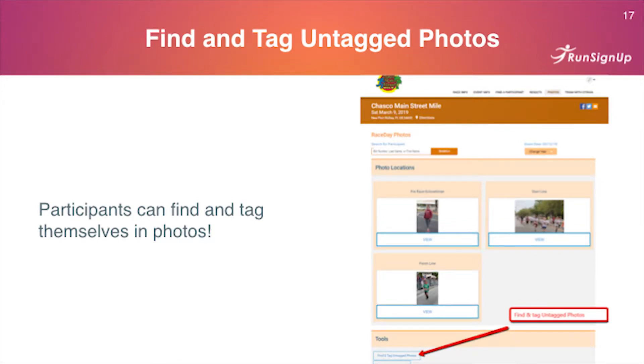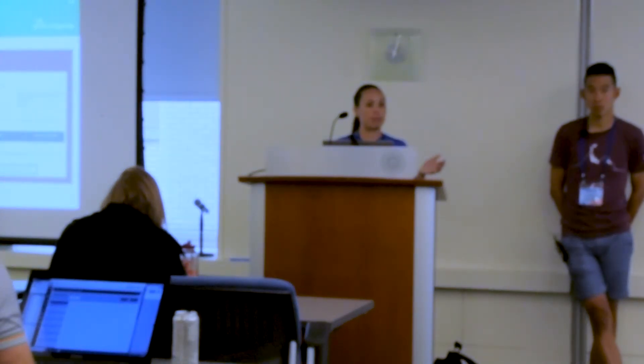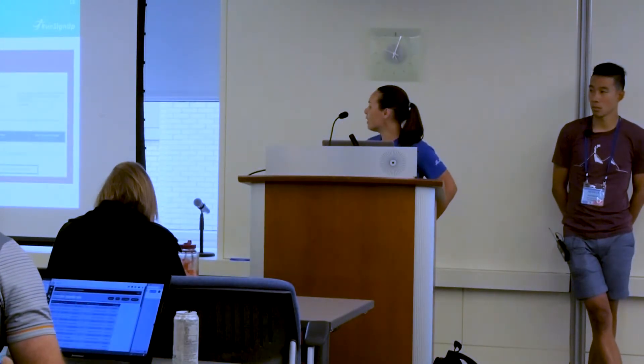Participants can find and tag themselves in photos by going to the photo page and visiting the untagged photo section, which filters out all photos that haven't been tagged yet. Question: can you search by team name? No, it's just by individual name or bib number. Question: are participants paying for these pictures? No, they're free — there's no paywall. You can offer an add-on for participants to purchase video, but photos can be shared directly to Facebook from the page. The team decided not to do a paywall for photos to make it more open.